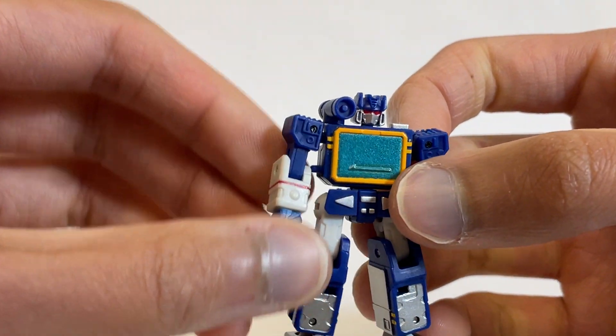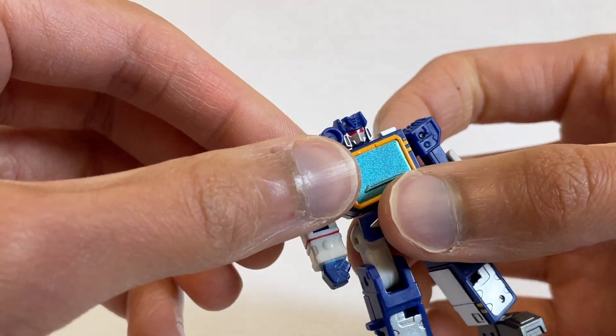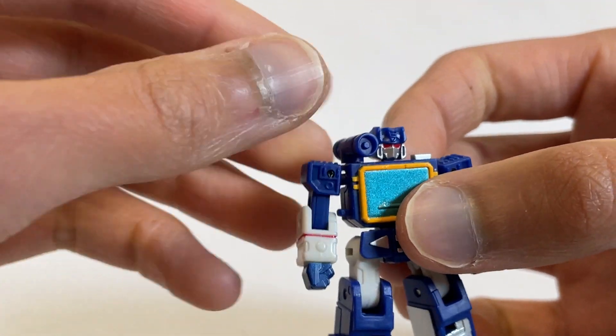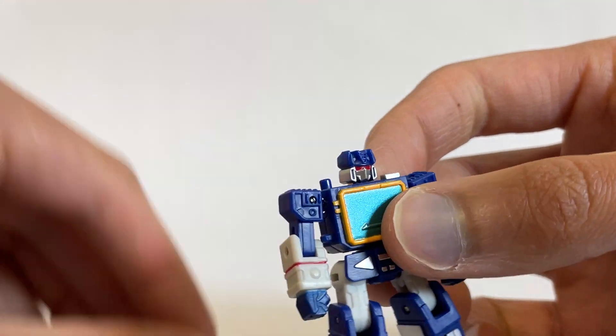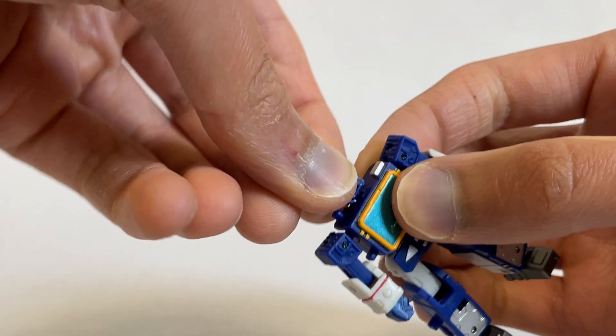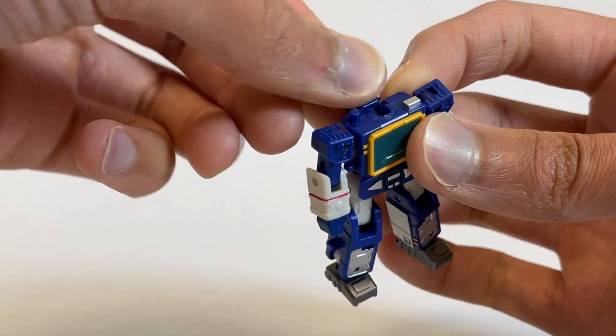And now let's get him transformed, because that is the next amazing part of these figures is they actually can transform. So to start, remove that shoulder cannon. That's just a little peg there. Rotate the head around, and then drop it down and back.